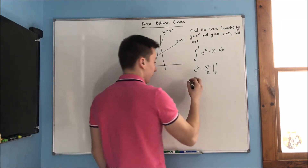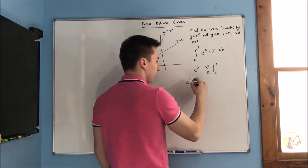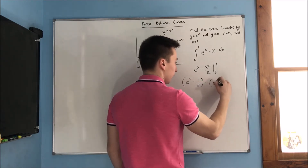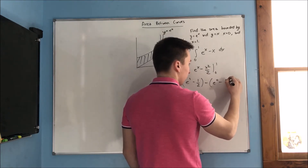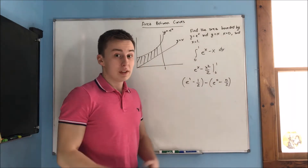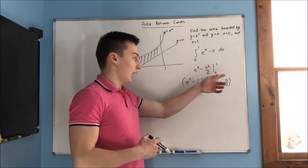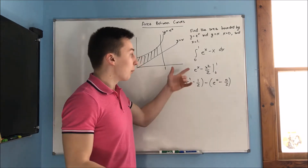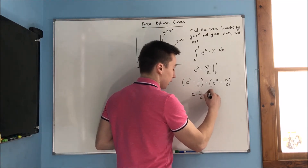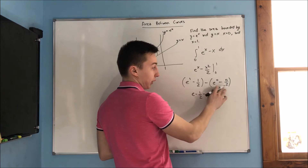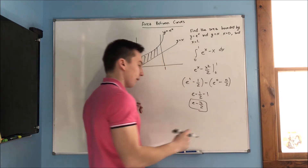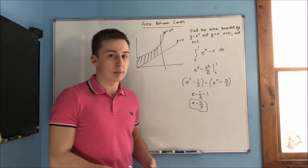We evaluate the whole thing. We get e to the first minus 1 over 2, minus e to the 0 minus 0 over 2. Make sure you evaluate with that 0 — we have an e to the x here, and e to the 0 is 1. So we're going to get e minus 1 half, minus 1, which gives us e minus 3 halves. That's a quick example of what I'm talking about.